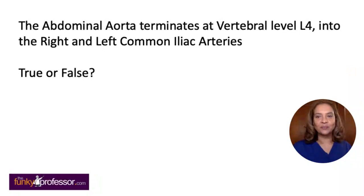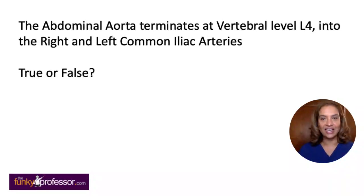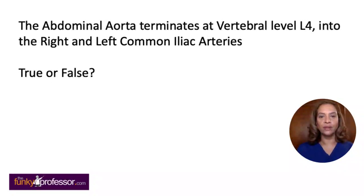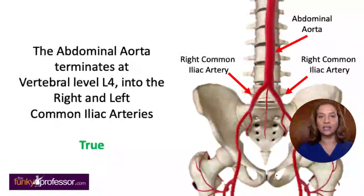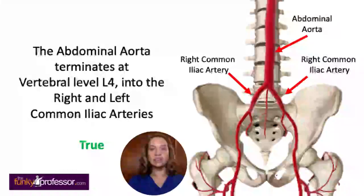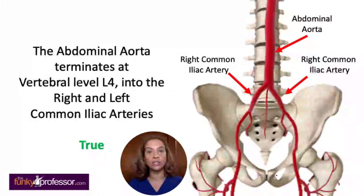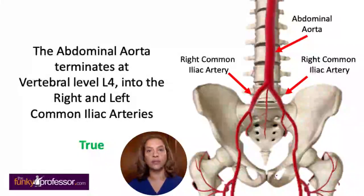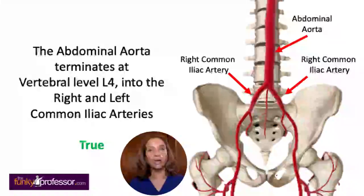Next question: the abdominal aorta terminates at vertebral level L4 into the right and left common iliac arteries — true or false? The answer is true. The abdominal aorta runs down the midline and divides into the right and left common iliac arteries, which divide into the external iliac artery (becoming the femoral artery supplying the lower limb) and the internal iliac artery (supplying structures within the pelvis).